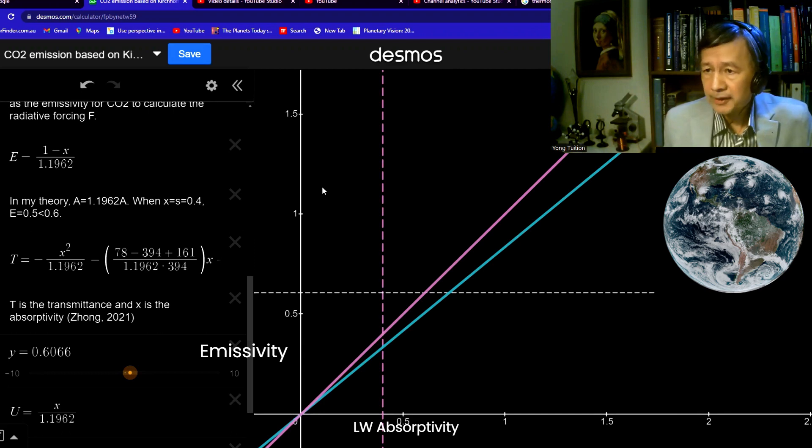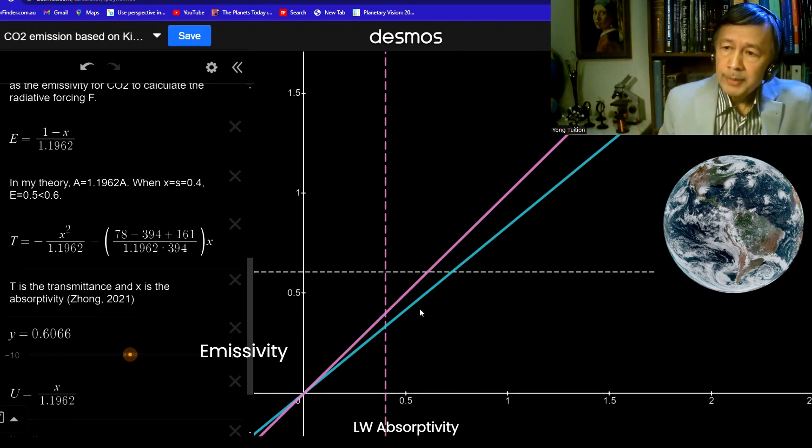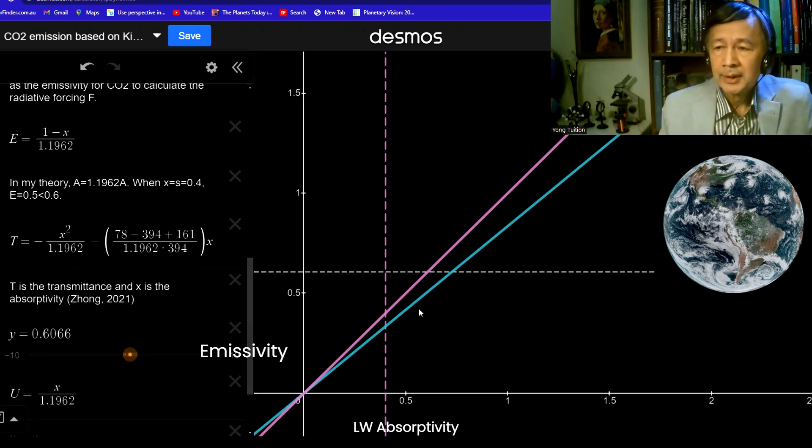It could be by water vapor, it could be by CO2. Until now, many people still take it for granted that we can apply Kirchhoff's law for radiation for studying of the atmosphere. But this is fundamentally wrong, because Kirchhoff's law is valid for black body, only the ideal radiators and absorbers.